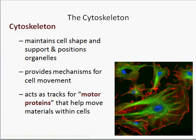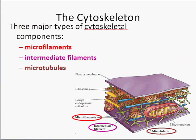The last component to talk about is the cytoskeleton. Our cells have an internal rigid support system to help give them structure and support. It's important for support, it helps position organelles, and it's also related to movement of the cell itself and movement of things within the cell. If you look at this section of a cell in the picture, you see all this network inside — it's not just cytoplasm and organelles, there's an internal framework that is the cytoskeleton.